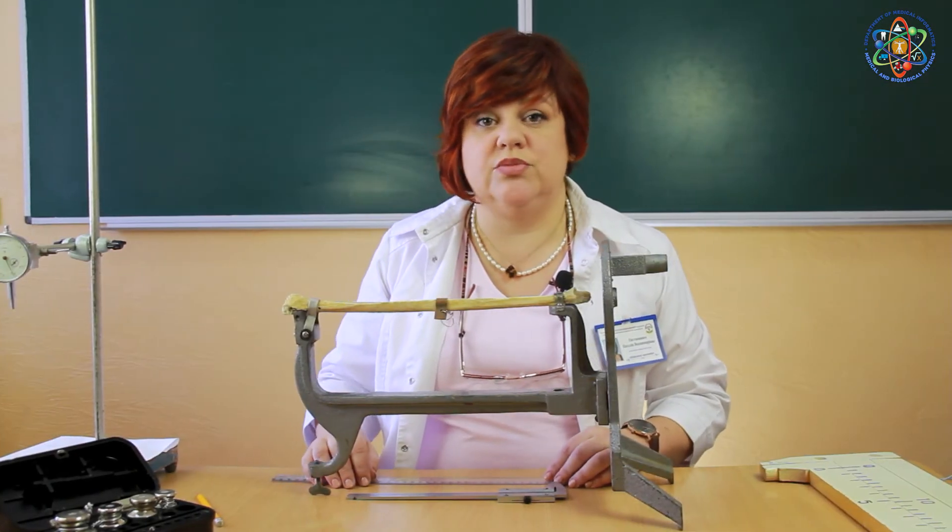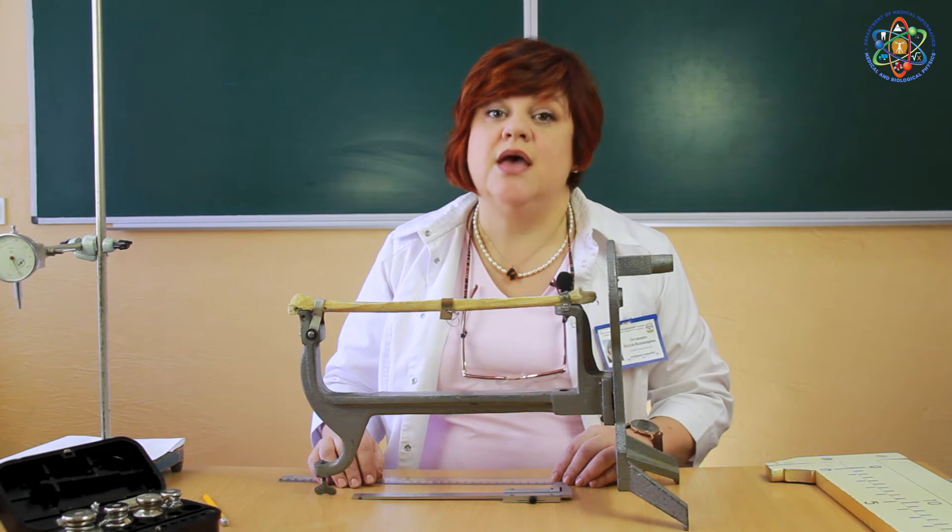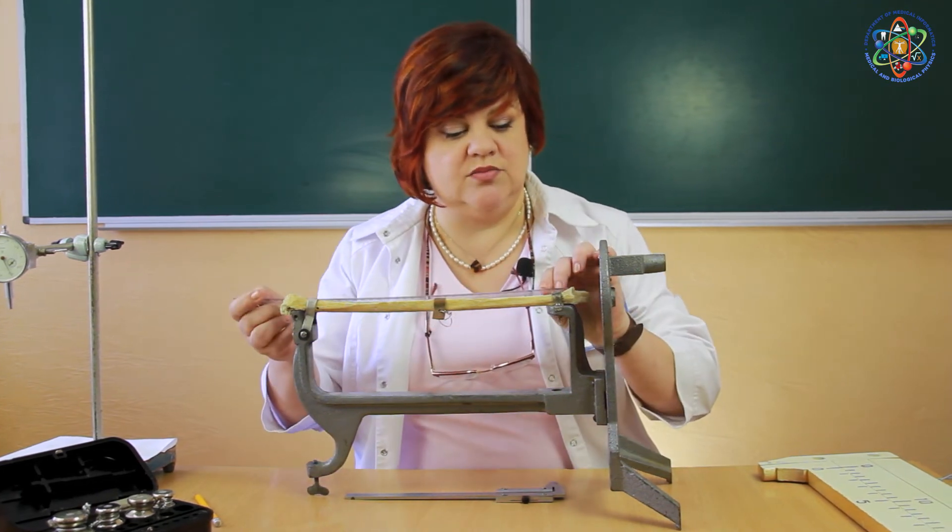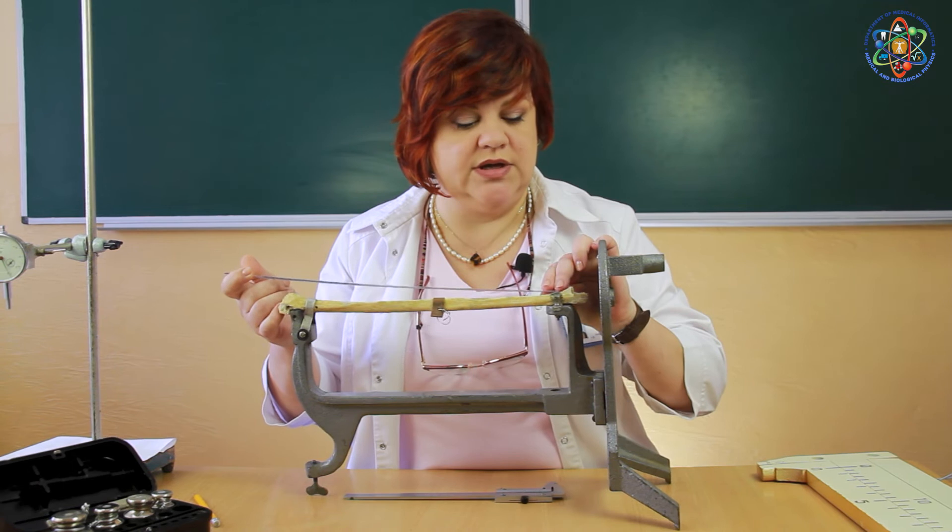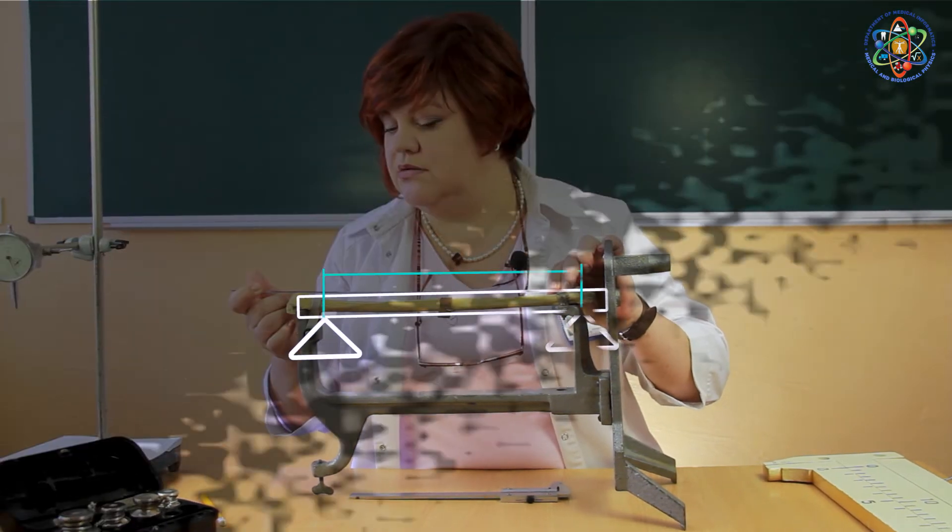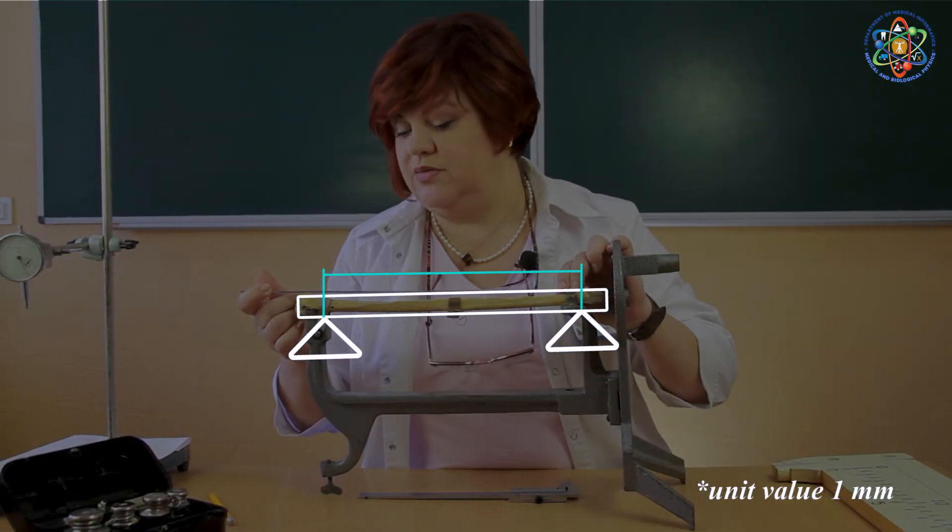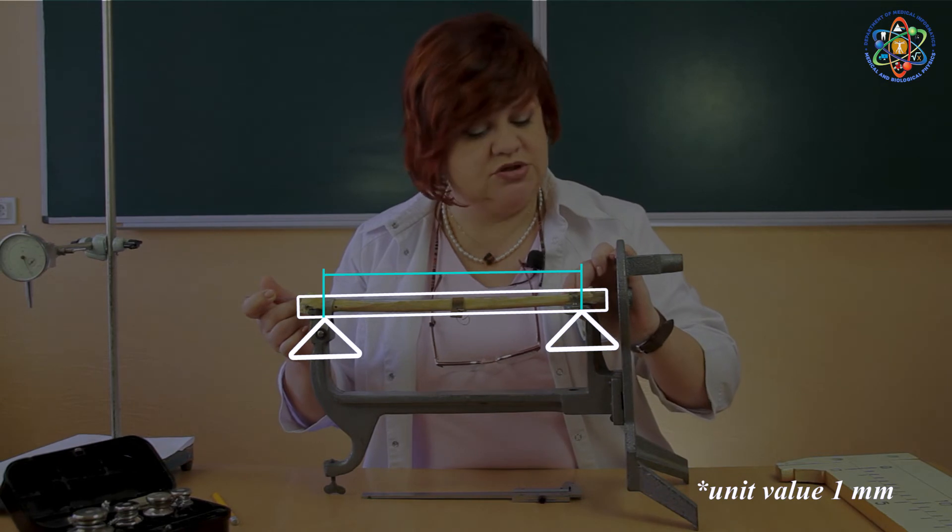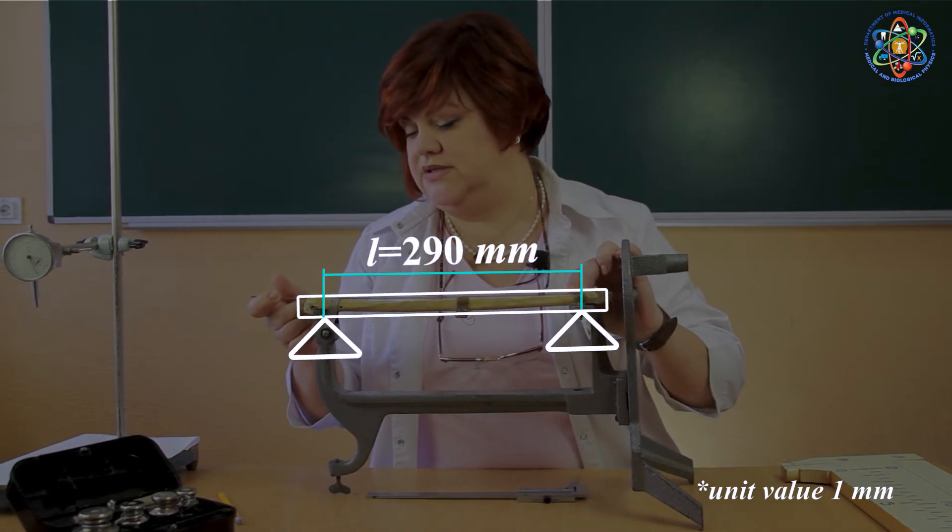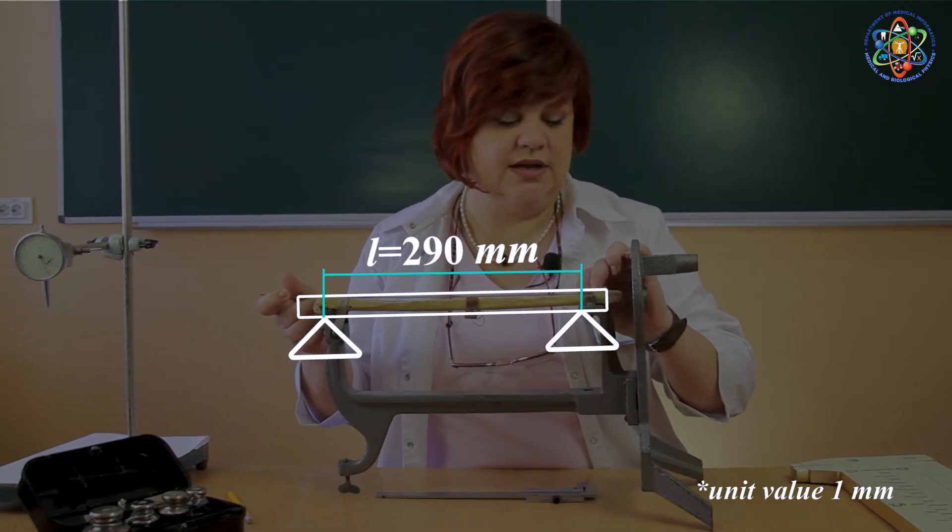So let us proceed to the laboratory work according to the instructions. First, let's measure the distance between the supports with the help of a ruler. The unit value of the ruler caliper is 1 mm. The distance between the supports is 290 mm.